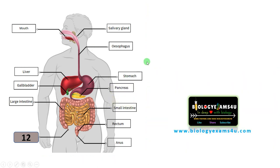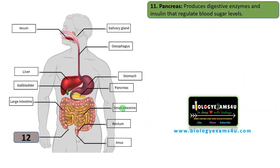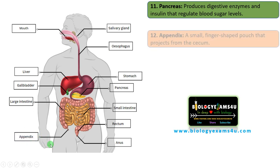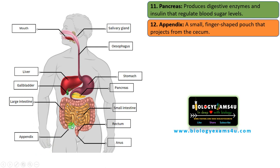The next structure is the pancreas, a gland that produces digestive enzymes and bicarbonates which help to digest carbohydrates, proteins and fats. It also produces insulin, a hormone that regulates blood glucose levels. The final structure is the appendix, a small finger-shaped pouch that projects from the cecum. The exact function of the appendix is not known and it is often considered a vestigial organ.